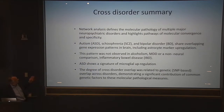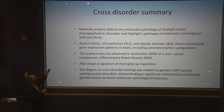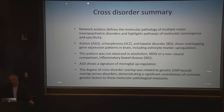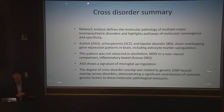The cross-disorder summary: we've defined the molecular pathology of multiple major neuropsychiatric disorders, highlighting pathways. Autism, schizophrenia, and bipolar share overlapping gene expression patterns, including astrocyte upregulation, but autism shows the specific signature of microglia upregulation. The degree of cross-disorder overlap was strikingly related to the genetic overlap among disorders, demonstrating a significant contribution of common genetic factors to these molecular pathologic measures. Much more dissection is needed — can we recapitulate this in model systems, alter excitation-inhibition balance to create these patterns?